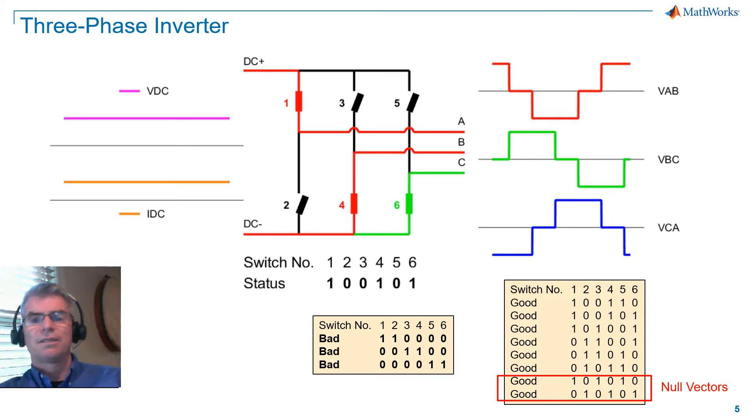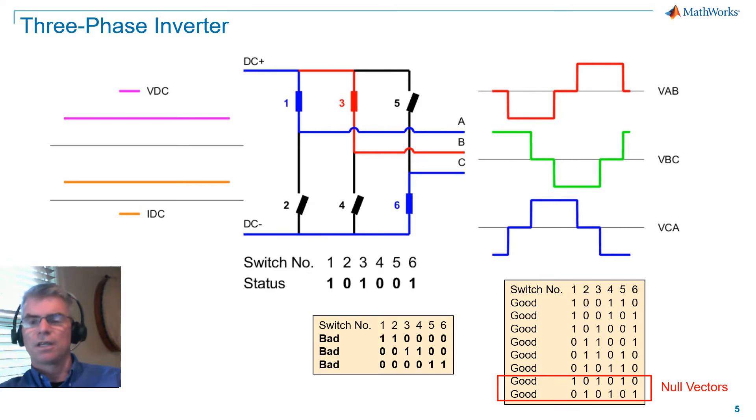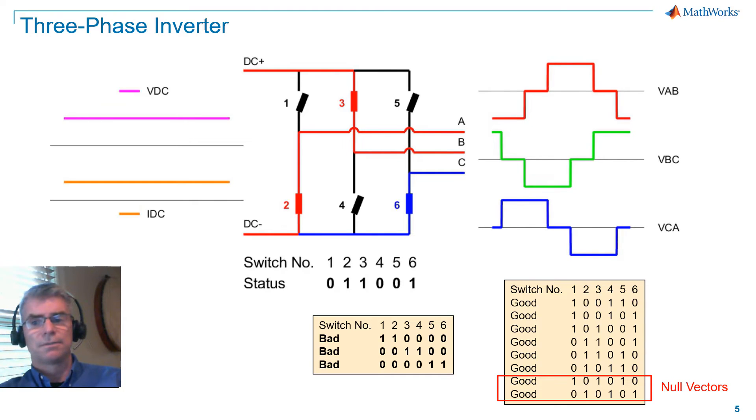So why do we need null vectors in a three-phase inverter? The answer relates to pulse width modulation. It needs more flexibility in achieving zero voltage than we can achieve with the simple switching sequence we see here.